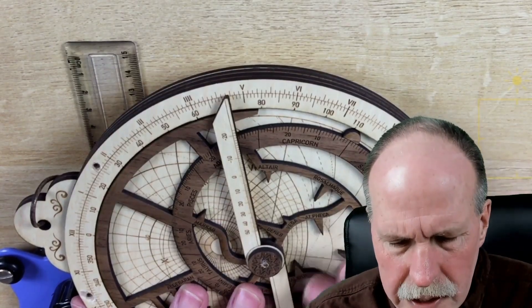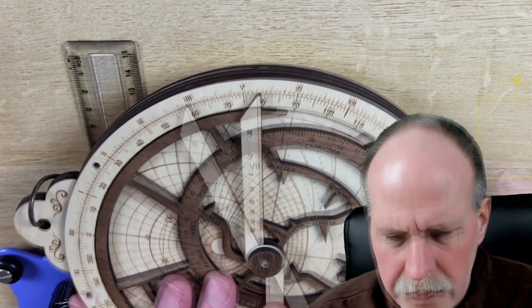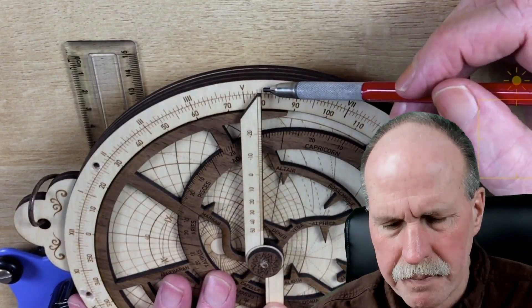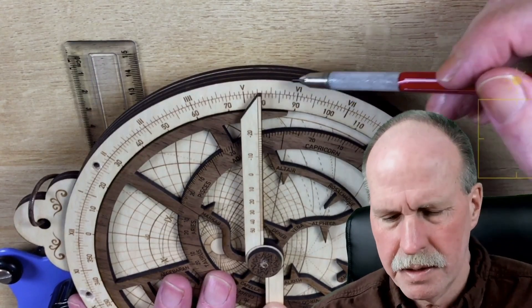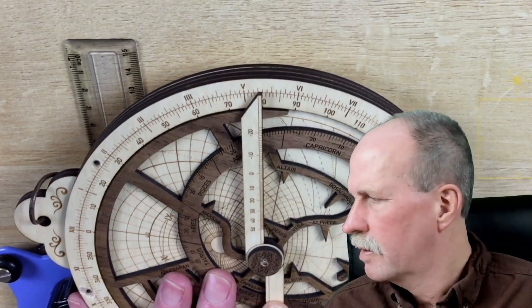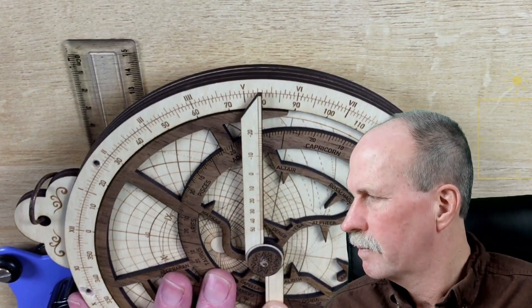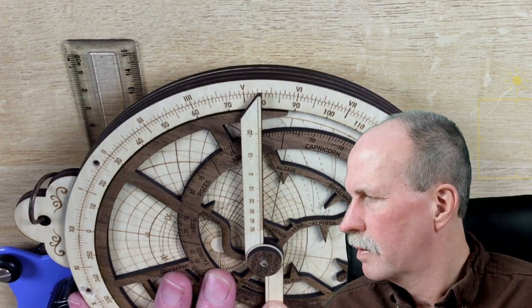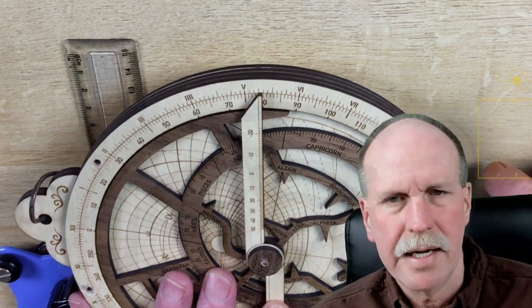And civil twilight, that will end. This is 5:20 plus 51 minutes would be 6:11. What do they have here? They've got 6:09. So that's how you use an astrolabe to tell time, and that's the solar time. And then we learned how to convert solar time to local time.